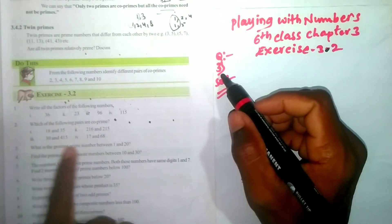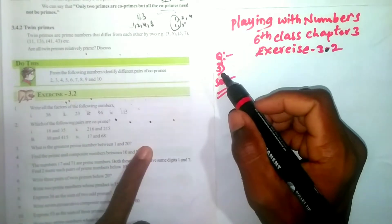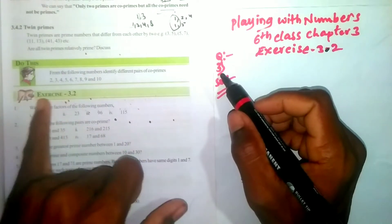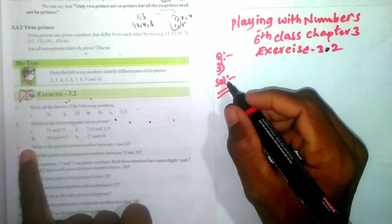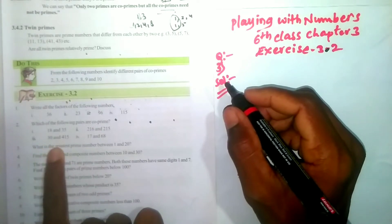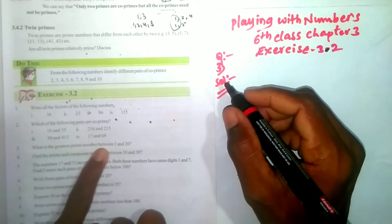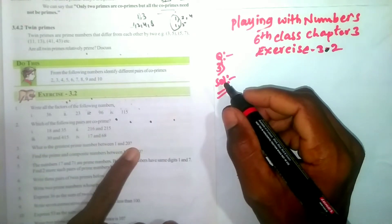You can see the explanation here. You can see the solution here. This is exercise 3.2, there is a third problem. What is the greatest prime number between 1 and 20?